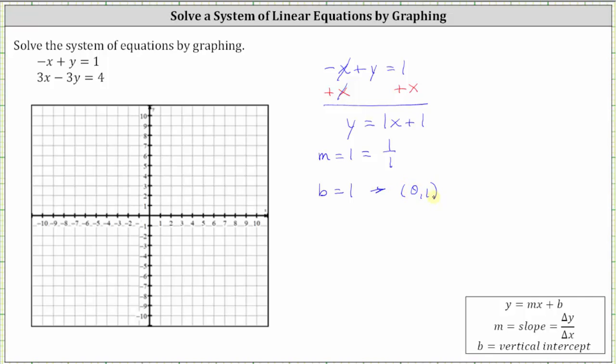Remember, the slope is equal to the change of y over the change of x, sometimes referred to as the rise over the run. And now we have enough information to graph the first line.